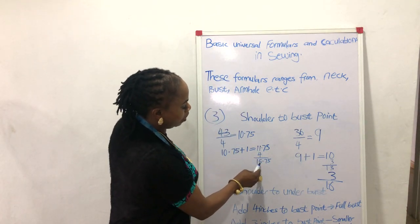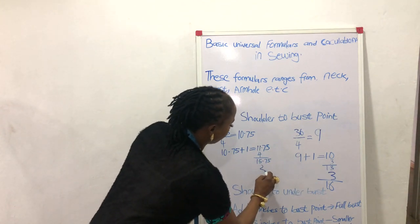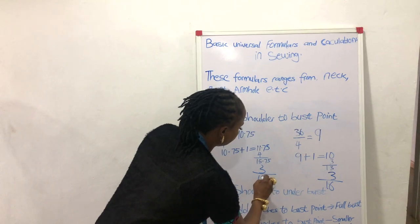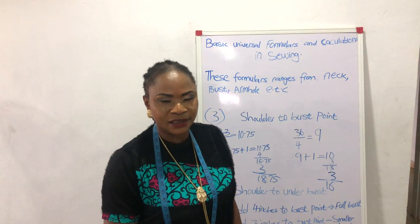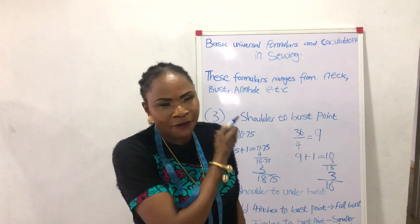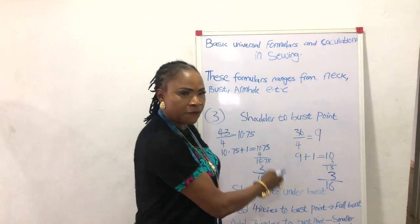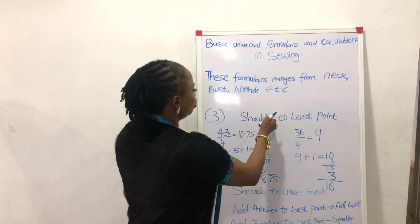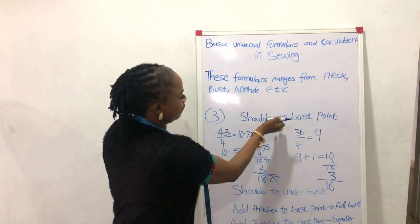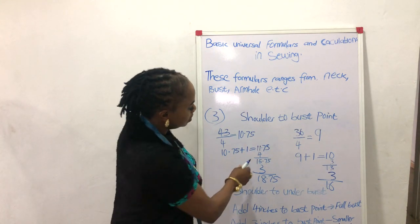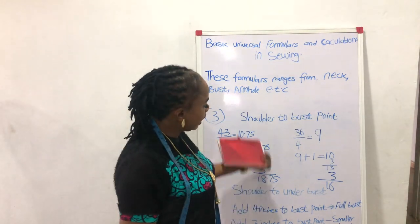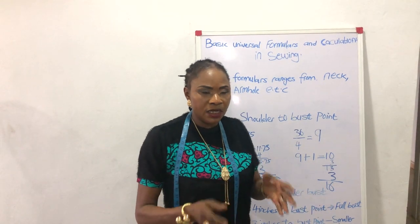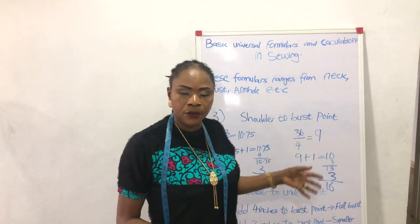For the bigger bust we added 4 inches to get the other bust and the same 3 inches to get 18.75 for the waistline. This is our full half-length — from the shoulder to the bust point, then bust point to the other bust, then from the other bust to the waistline. So this is the half-length of your blouse. We are done with the top formula on the board today.